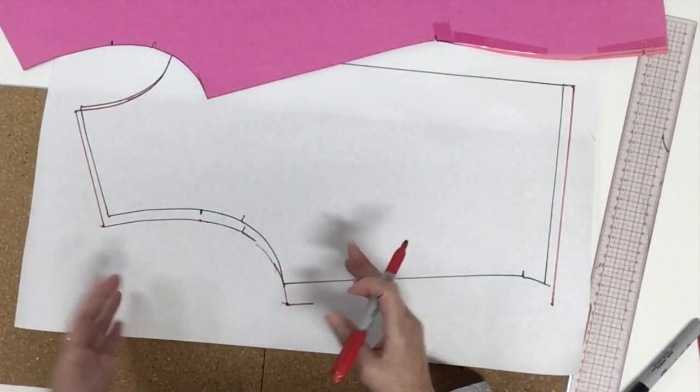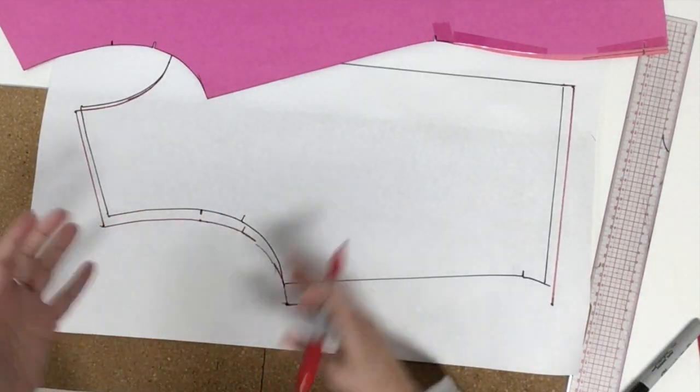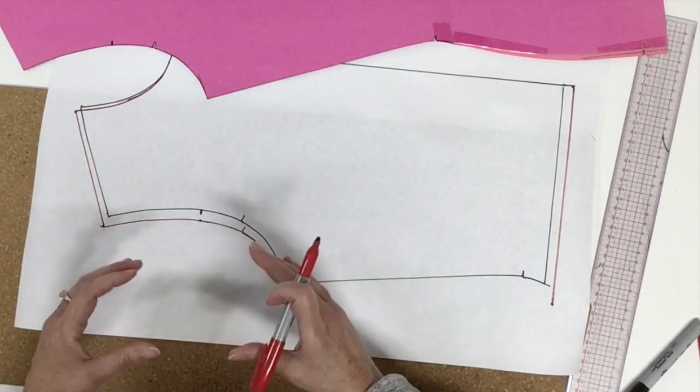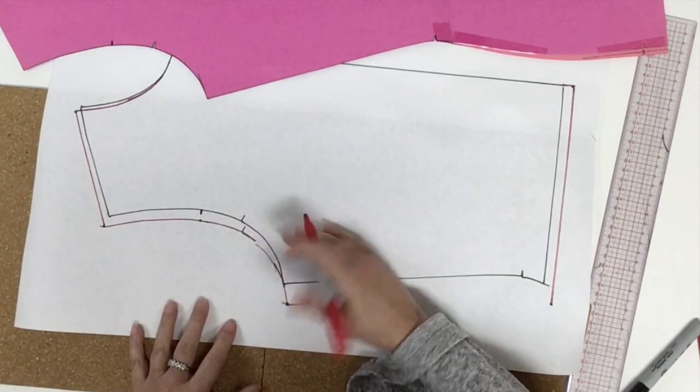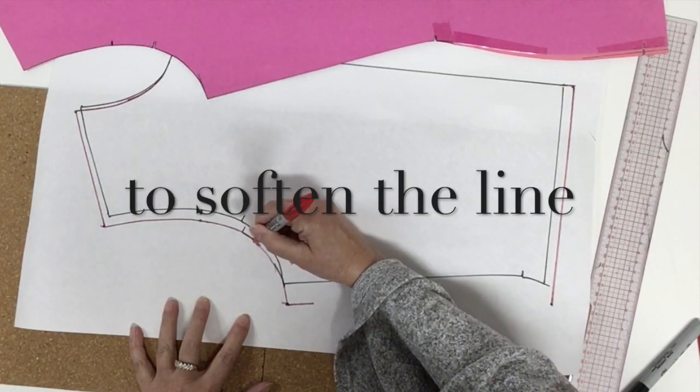There you go. Usually if you do it like that, the shape of your armhole should remain pretty much the same. It's just like we stretched it a bit. If you have a little correction to do, it should be a little and we just do it.